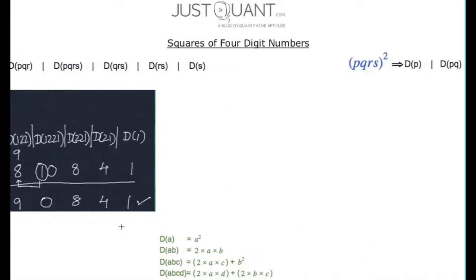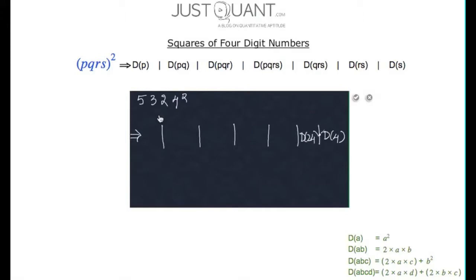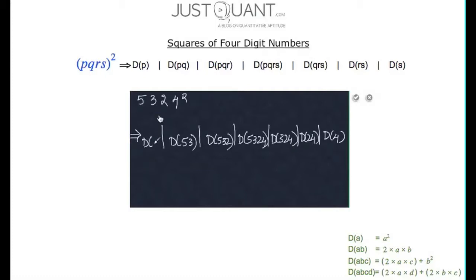Let us look into another example. Consider 5324 squared. We know that the solution will have 7 parts. The right-most part will be duplex of 4. The next part will be duplex of 24. The one after that will be duplex of 324. The middle part will be duplex of 5324. The next part will be duplex of 532. The one after that will be duplex of 53. And finally, the left-most part will be duplex of 5. We know that the duplex of 4 is 4 squared, which is 16. To make our calculations faster, let us carry over the non-unit digit numbers now itself. Hence we carry over 1 to the immediate left part.